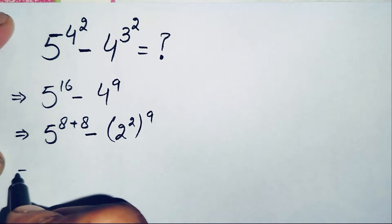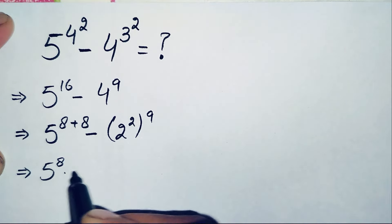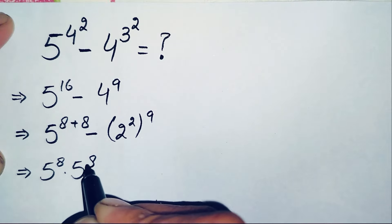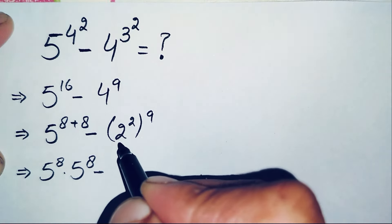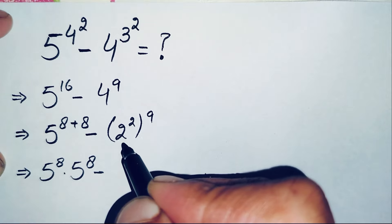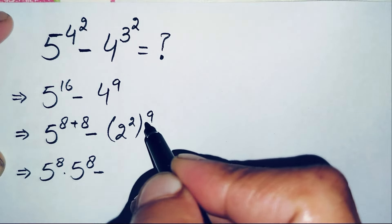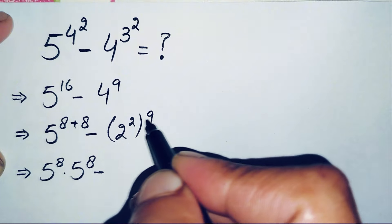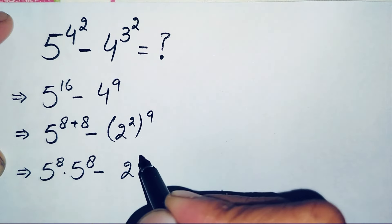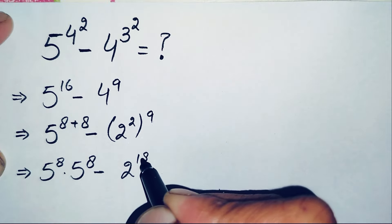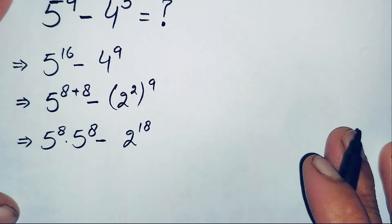So for 5, this will become 5 raised to power 8 times 5 raised to power 8. And for the other term we use the exponential property: a raised to power m raised to power n equals a raised to power m times n. So we multiply the powers: 2 raised to power 2 times 9, which is 18.